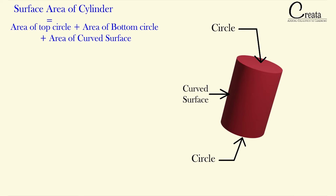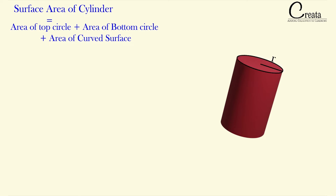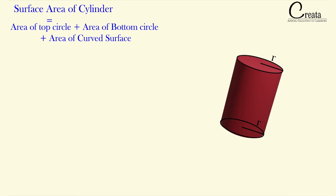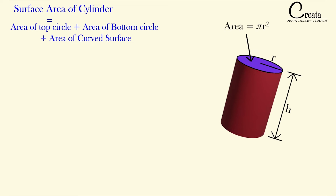The surface area of this cylinder will be equal to the area of the topmost circle plus the area of the bottommost circle plus the area of the curved surface. Let's give dimensions to this cylinder. Let's assume the radius of the top and bottom face as R — since all the plates are congruent, the radius of the complete cylinder will be the same. Let's assume the height of the cylinder as H. The area of the topmost plate will be πR², and the area of the bottommost plate will also be πR².